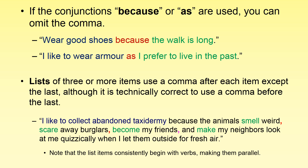Another area you probably remember from high school is using commas with lists. With lists, we usually introduce the list with an independent clause, then list items separated by commas. For example: 'I like to collect abandoned taxidermy because the animals smell weird, scare away burglars, become my friends, and make my neighbors look at me quizzically when I let them outside for fresh air.' The comma before the last conjunction is optional — it's correct either way. As a side note, we'll be looking at parallelism later — notice each list item starts with an active verb.